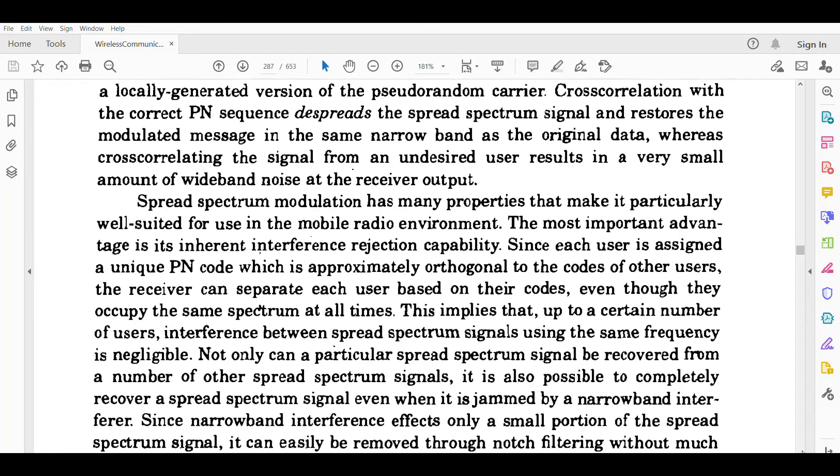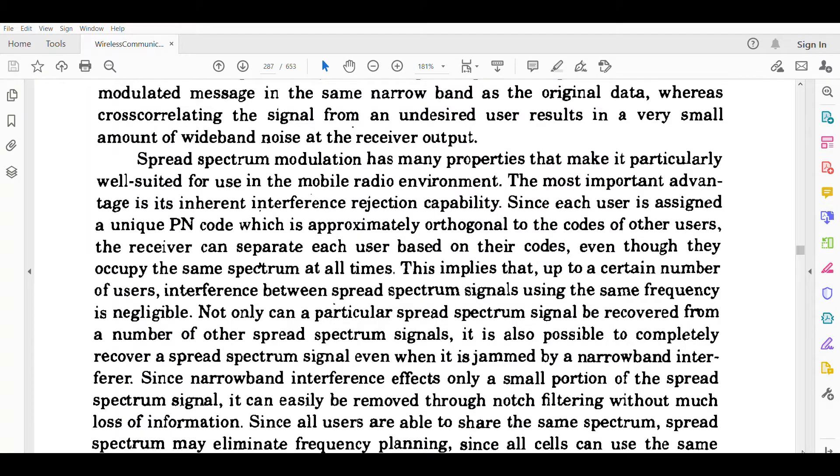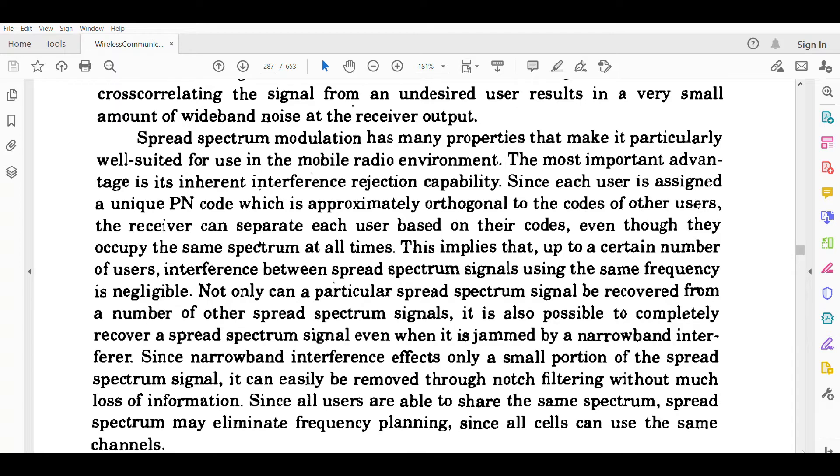The spread spectrum modulation has many properties that make it particularly well-suited for use in the mobile radio environment. The most important advantage is its inherent interference rejection capability. Since each user is assigned a unique PN code which is approximately orthogonal to the codes of other users, the receiver can separate each user based on their codes, even though they occupy the same spectrum at all times.